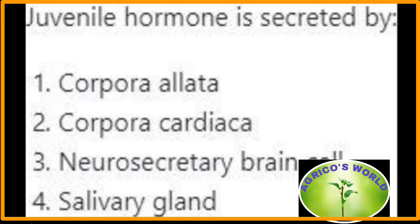Juvenile hormone is secreted by which of the following gland? Juvenile hormone is secreted by the corpora allata gland. Juvenile hormone inhibits metamorphosis and keeps the larvae in juvenile form. Professor William, in the year 1967, gave the term 'third generation of pesticides' to these chemicals.